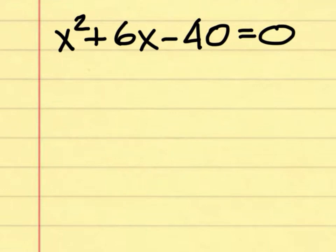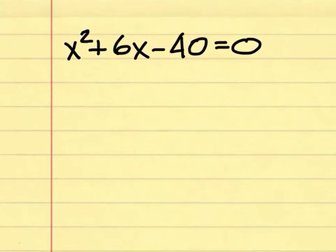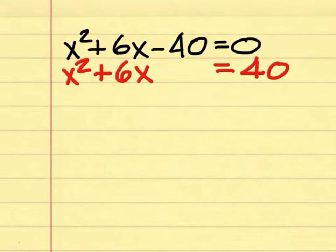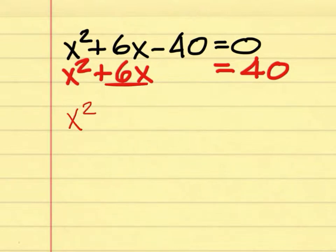To solve this by completing the square, your first step is to move the minus 40 to the right side and change the sign. Step 2 is to divide the middle term — the coefficient of the middle term, which is 6 — divided by 2. 6 divided by 2 is 3. 3 squared is 9.